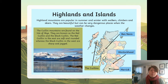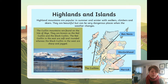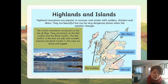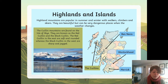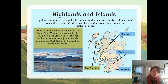They are beautiful but can be very dangerous when the weather changes. The Cuillin mountains are found on the Isle of Skye. They are known as the Red Cuillin and the Black Cuillin. The Red Cuillin in the east are soft and rounded, whereas the Black Cuillin in the west are sharp and jagged.